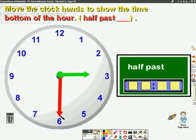This tells us that the time we read would be half past something. Now, observe the hour hand. The shorter hour hand is now pointing between the 3 and the 4.